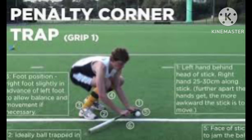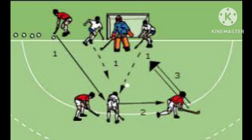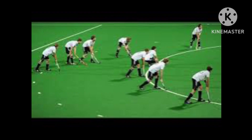A penalty corner in hockey is awarded to the opposition when a player commits a foul within the striking circle, but not always to thwart a possible goal scoring opportunity.